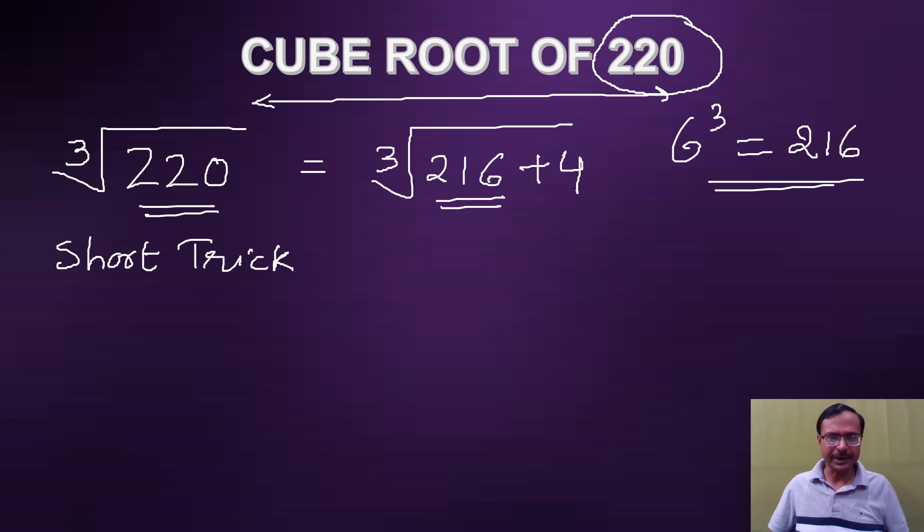My answer is larger than 6, so 6 plus something, right? What is that something? See, how much is 220 more than 216? It's 4 more than 216. So I'll write 4 in the numerator, over 3 times.